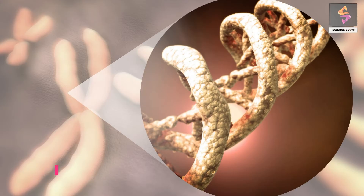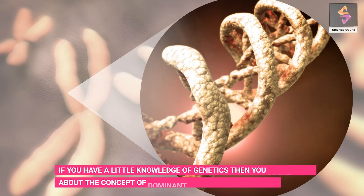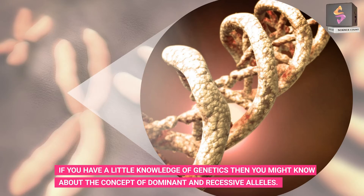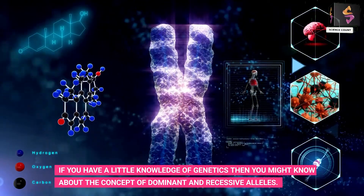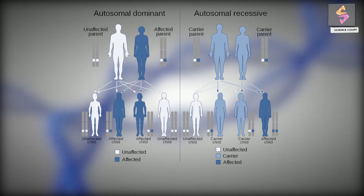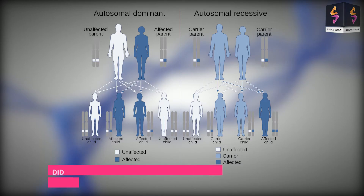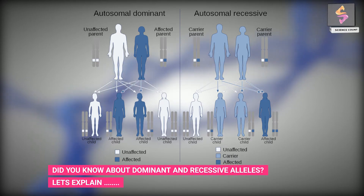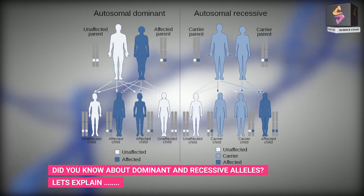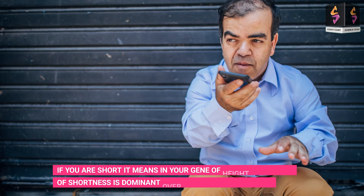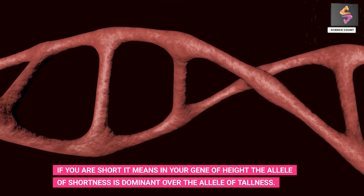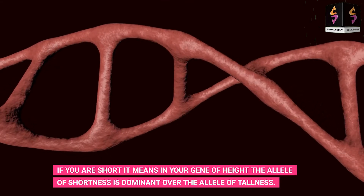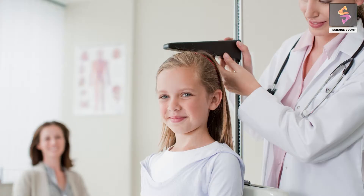If you have a little knowledge of genetics then you might know about the concept of dominant and recessive alleles. Let's explain. If you are short, it means in your gene of height the allele of shortness is dominant over the allele of tallness.